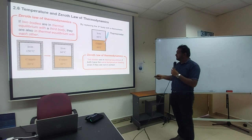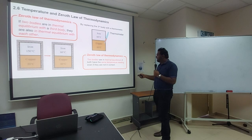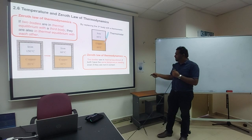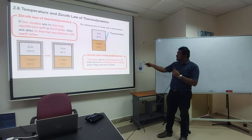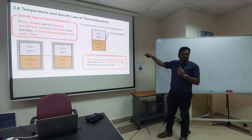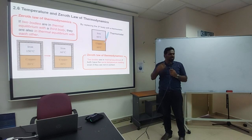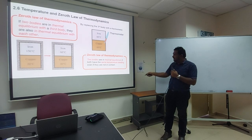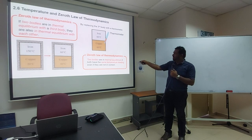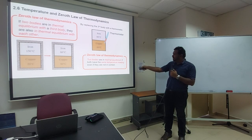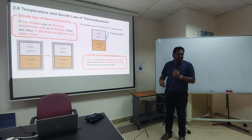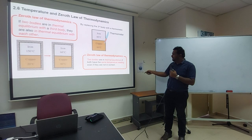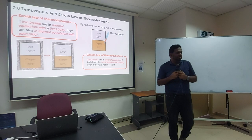Two bodies are in thermal equilibrium if both have the same temperature reading, even if they are not in contact. In the case of iron and copper, they were in contact — heat transfer by conduction is based on physical contact. But if two bodies are in an environment not touching each other, with no physical contact, and they have the same temperature after some time, they are still fulfilling the Zeroth Law of Thermodynamics.